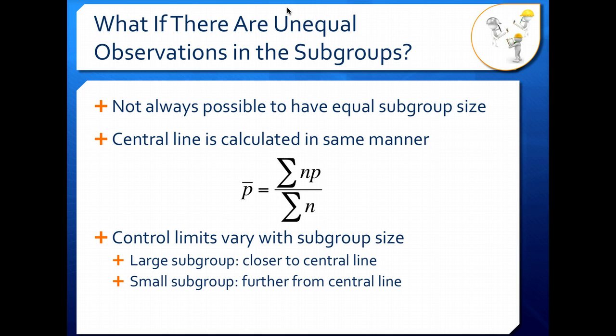And this has to do with statistics. The smaller your subgroup is, the less sure you can be about that measurement being a true estimate of your population, of your total amount of product.